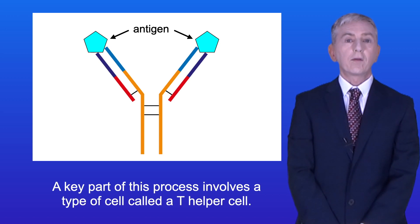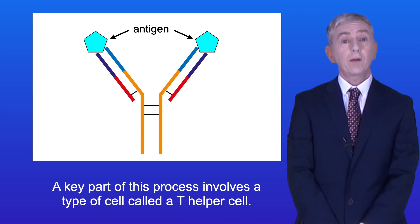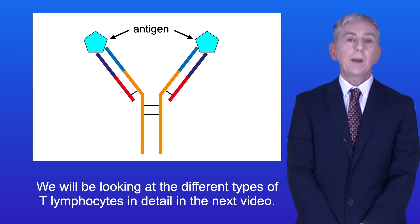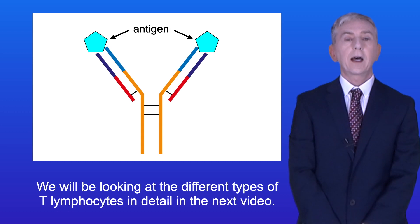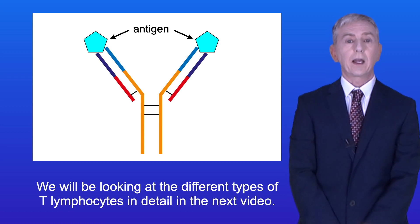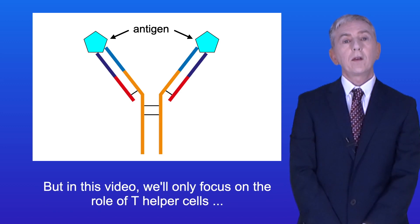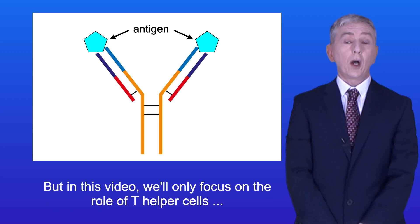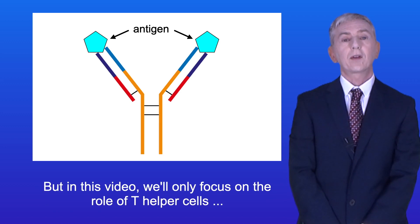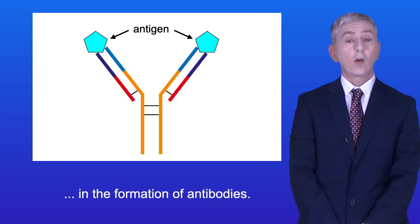A key part of this process involves a type of cell called a T helper cell. We'll be looking at the different types of T lymphocytes in detail in the next video, but in this video we'll only focus on the role of T helper cells in the formation of antibodies.